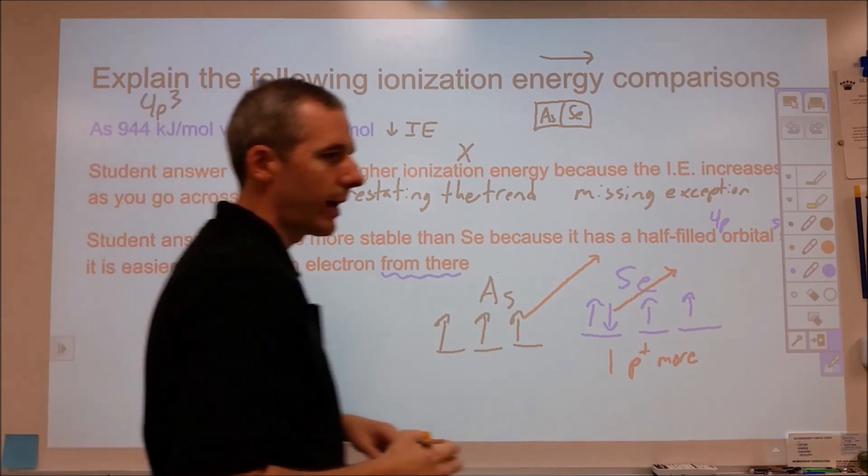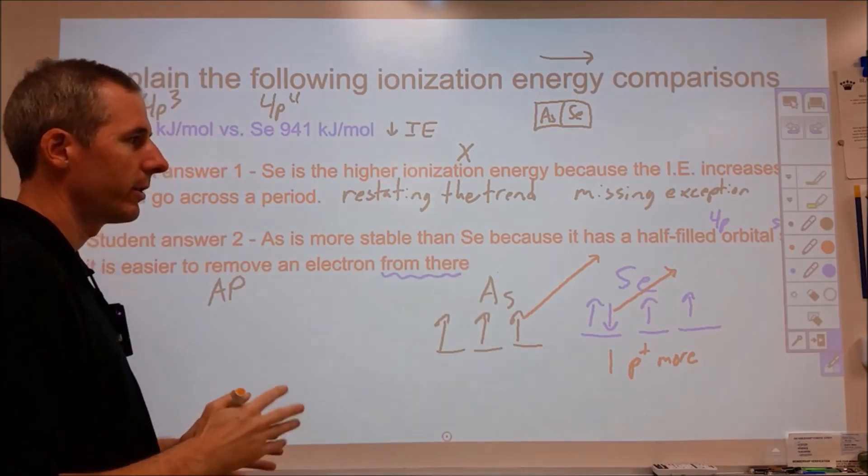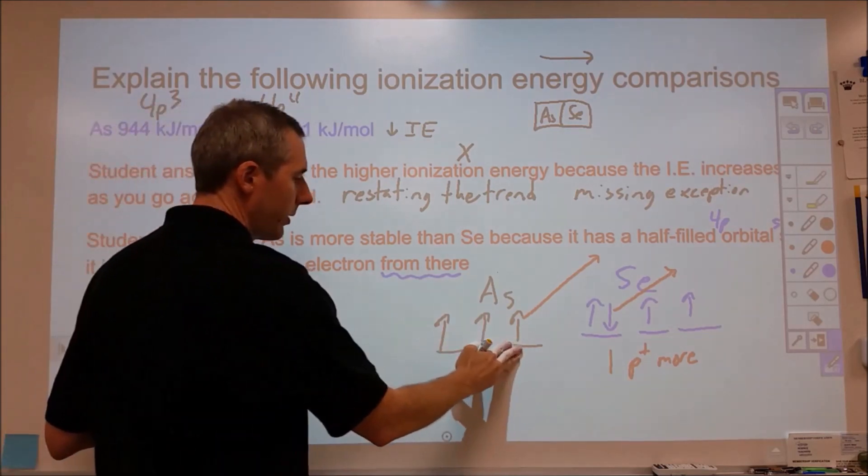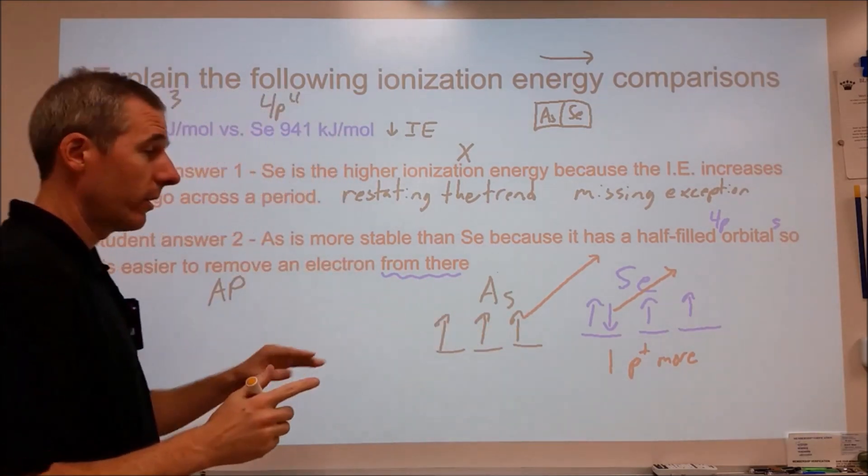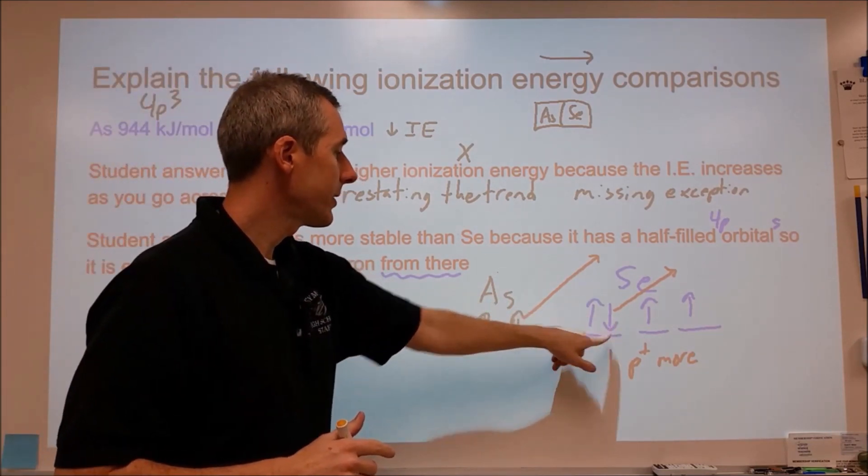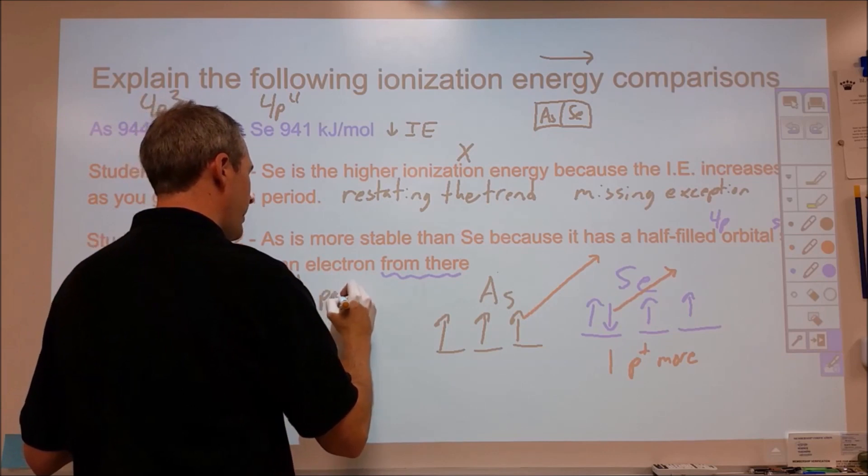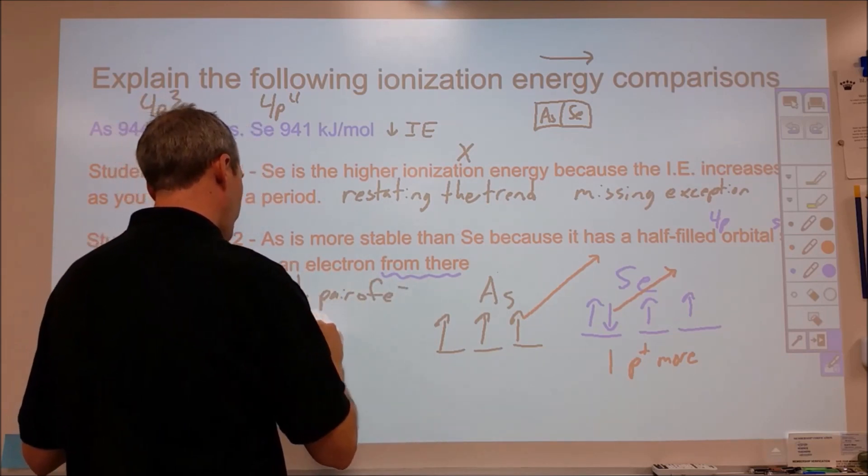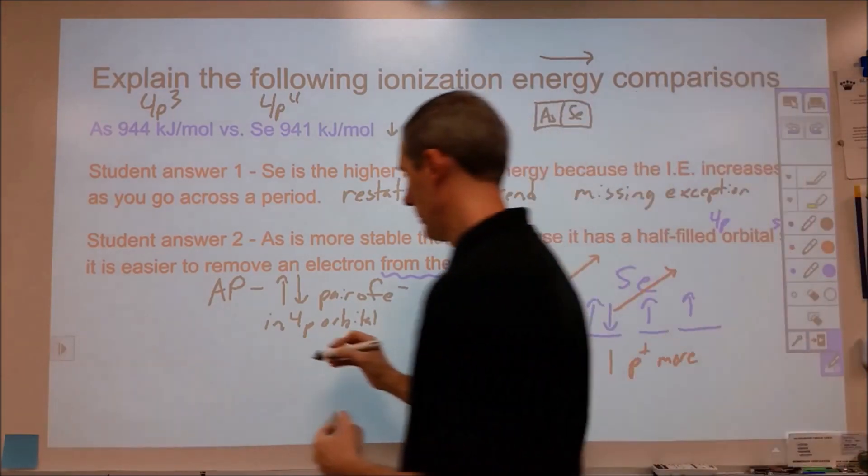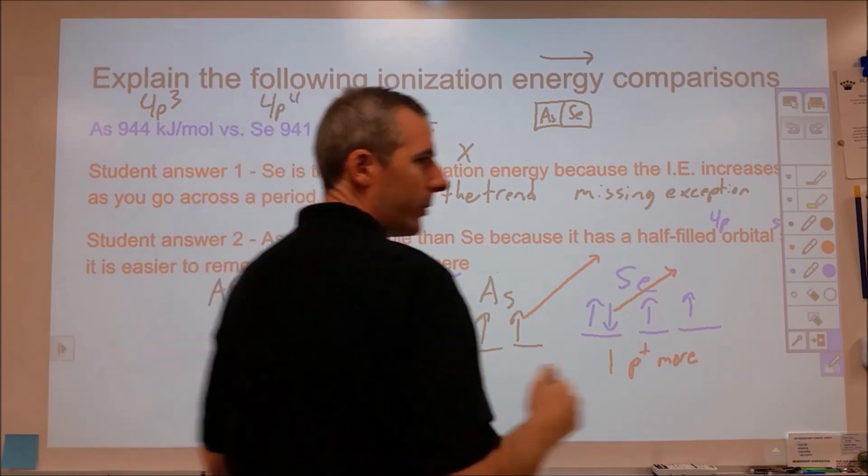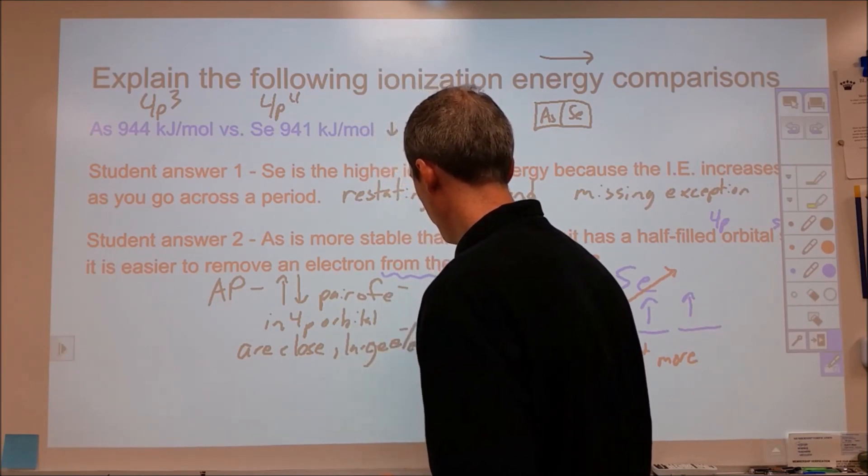But if you are taking an AP or maybe even an IB chemistry test, the way that they will want this explained, they will not want you to say it's because half-filled orbitals are more stable. They don't want you to just say stable because that really doesn't communicate your understanding. Now, it turns out there are multiple reasons why this is slightly less than this. The AP version that they want you to state is that these two electrons are a pair of electrons in the 4p orbital. Because these two are in the same orbital, that means they're going to be close together. And when two electrons are close, there's a repulsion between them.